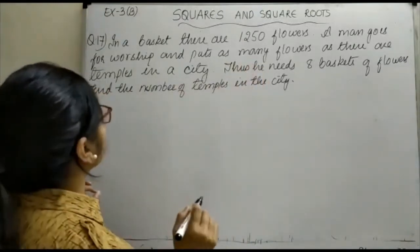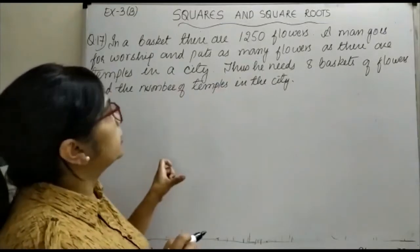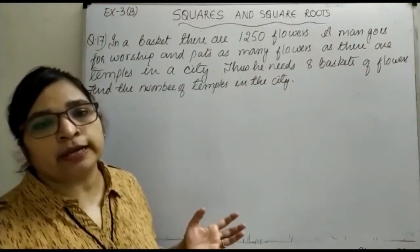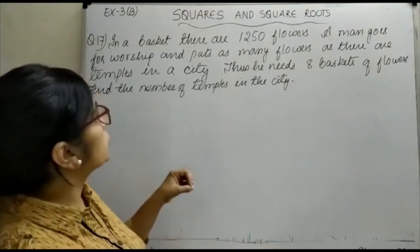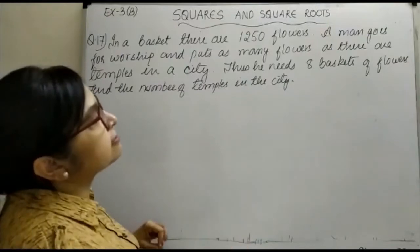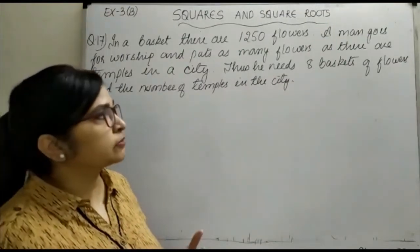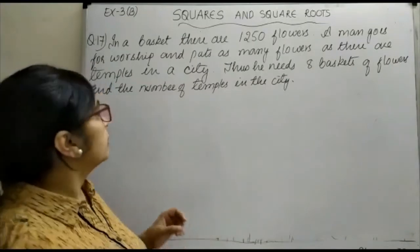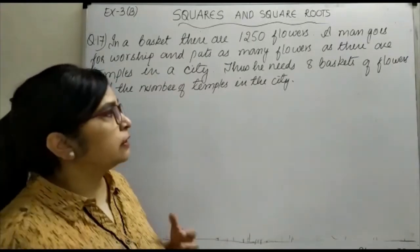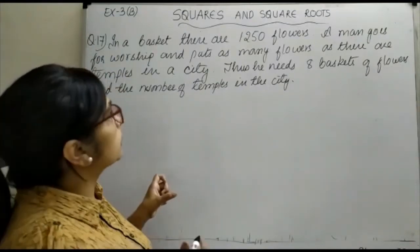A man goes for worship and puts as many flowers as there are temples in a city. So the number of flowers he places in each temple equals the number of temples. He needs eight baskets of flowers to do this. We have to find the number of temples in the city.